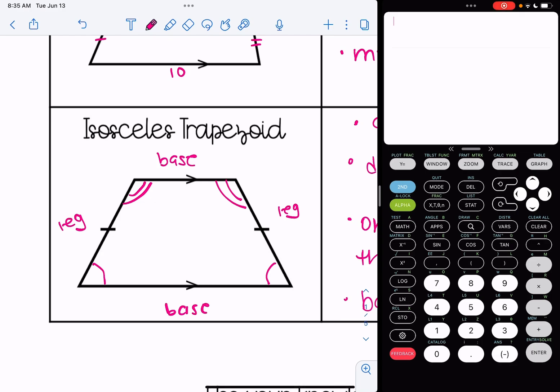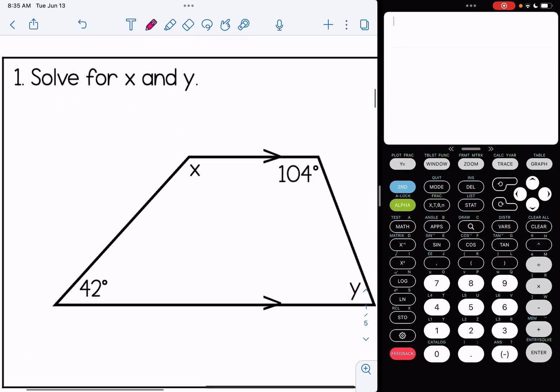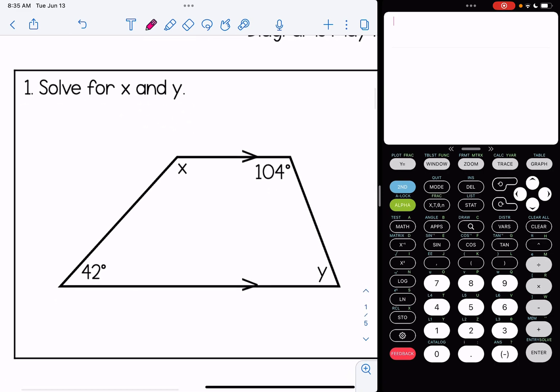Alright, let's look at some sample problems that involve trapezoids and isosceles trapezoids. Number one, solve for X and Y. This looks to be just a regular trapezoid here. I have nothing indicating it's isosceles. And we're looking for angles. So we know that the same side interior angles are supplementary.